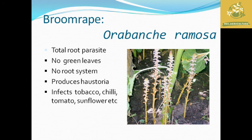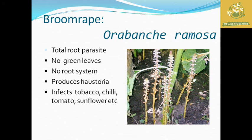After that we are going to see broomrape, also known as Orobanche ramosa, which is a total root parasite. It is absent of green leaves, has no root system, and is mainly propagated through haustoria, infecting tobacco, chili, tomato, and sunflower. When heavily affecting a crop, broomrape becomes more vigorous than the host crop itself.